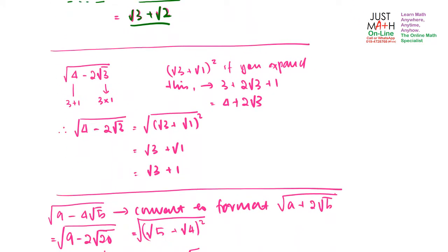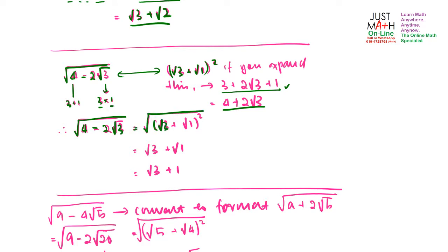Next example: root of (4 minus 2 root 3). Root 3 is actually 3 times 1, and 4 is actually 3 plus 1. So you have (root 3 plus root 1) squared. Expanding and simplifying, root (4 minus 2 root 3) equals root of (root 3 plus root 1) squared. Remove the square and root to get root 3 plus root 1, which simplifies to root 3 plus 1.